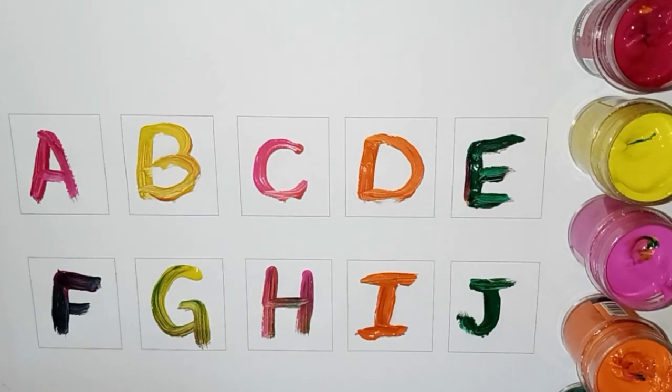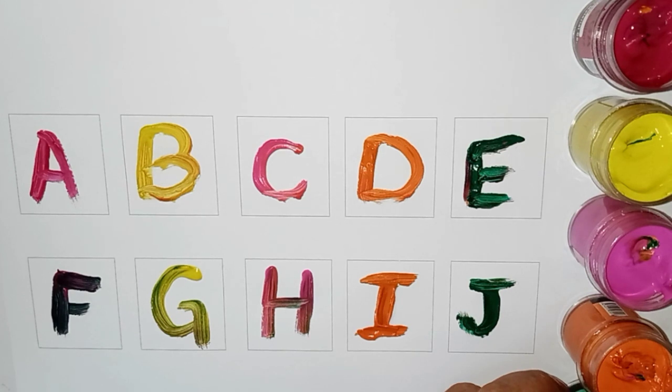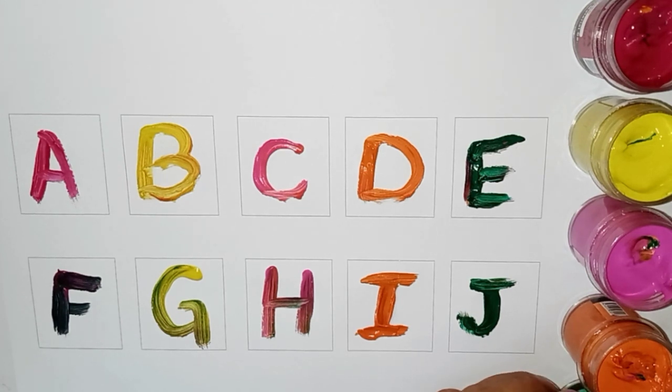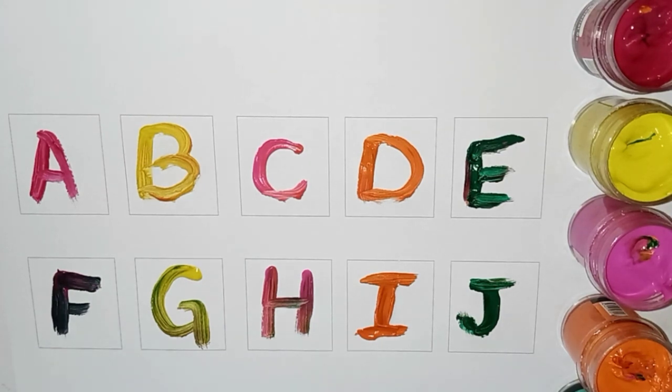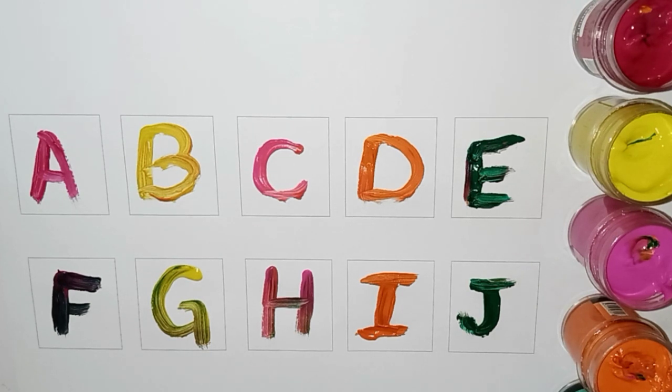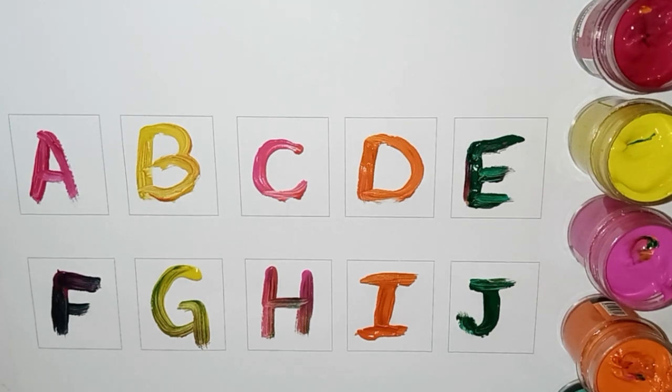J for Jack. Okay. A, B, C, D, E, F, G, H, I, J, K, L, M, N, O, P, Q, R, S, T, U, V, W, X, Y, Z.